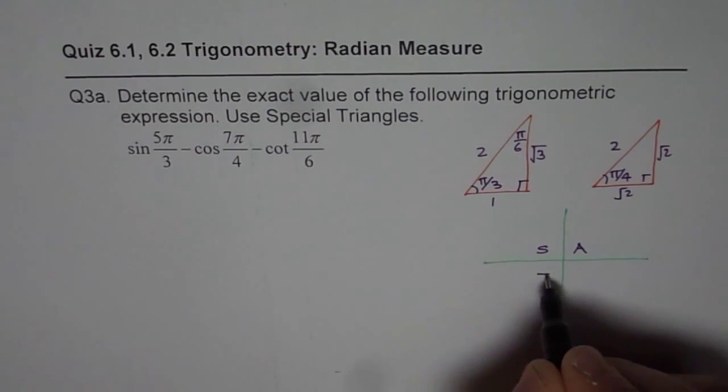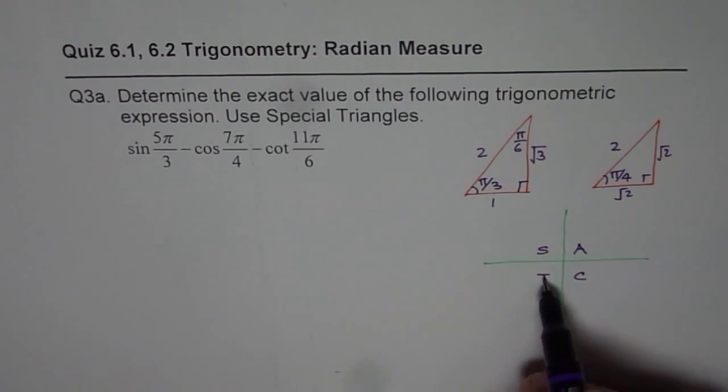All are positive in quadrant 1, sine and then tan and cos. All silver teacup or CAST rule, as you wish.